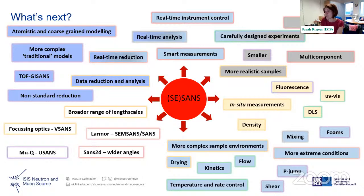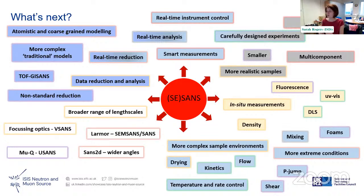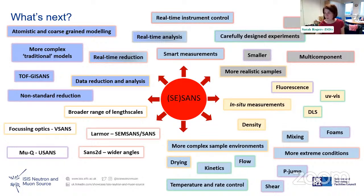In-situ measurements are really becoming prominent — people want to do light scattering or UV-vis at the same time as their SANS measurement to confirm the sample matches what they have in the lab. In terms of sample design, people want more realistic multi-component systems, which makes deuteration more complicated. Biology samples often don't come in large volumes, so we're always trying to go smaller and faster.